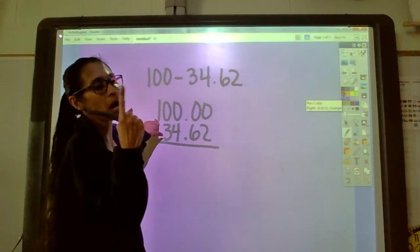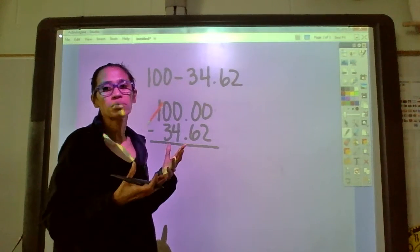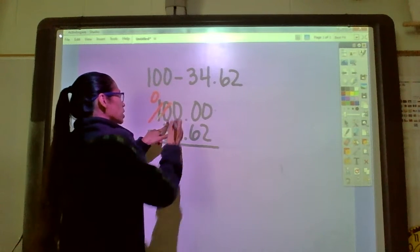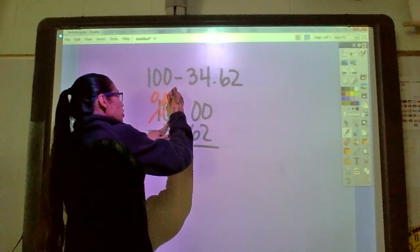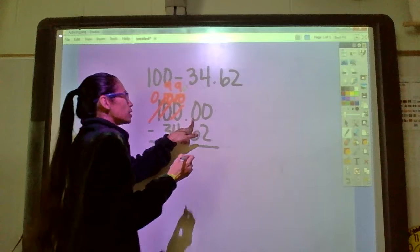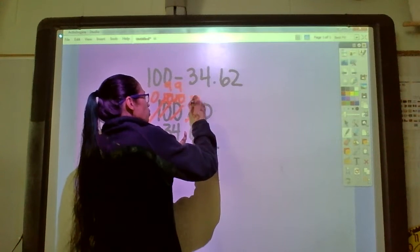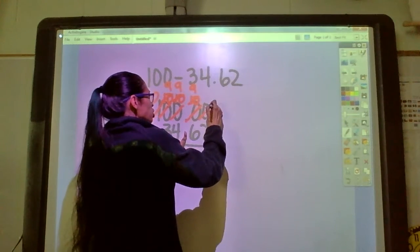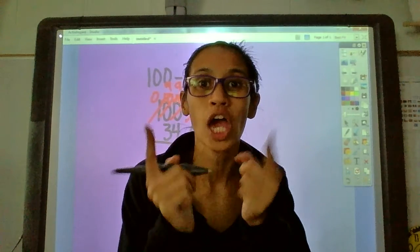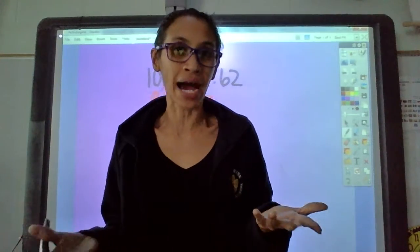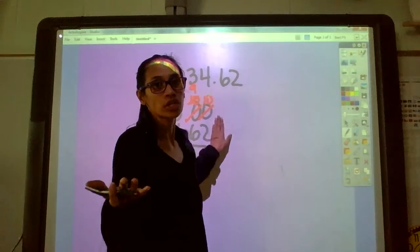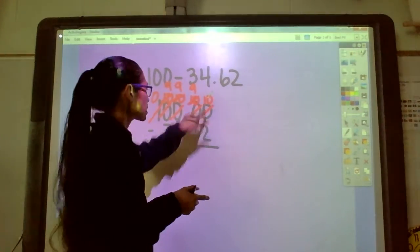Luckily we have one friend, one can save us with this subtraction problem. The one turns into a zero and that zero becomes a 10 which turns into a 9. That becomes a 10 which turns into a 9. This zero becomes a 10 which turns into a 9. And that zero becomes a 10 which turns into not a 9, it stays a 10. Some people mess that up and just make everything nines. Remember that last one, nothing borrows from that one so it stays a 10.